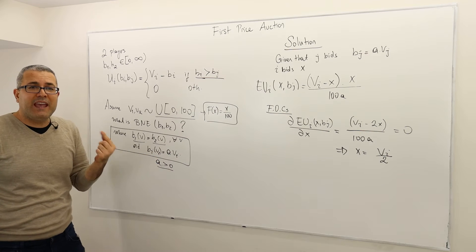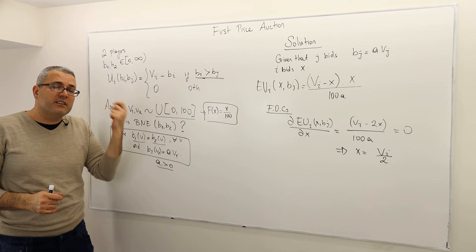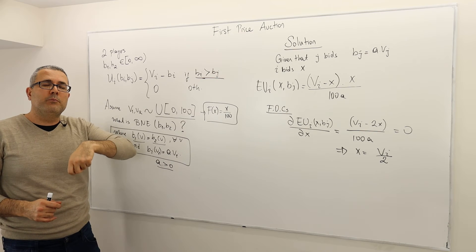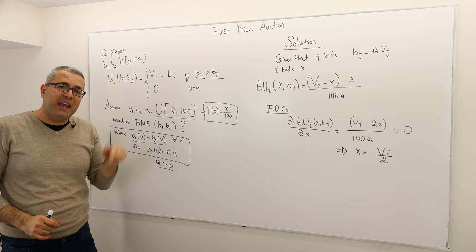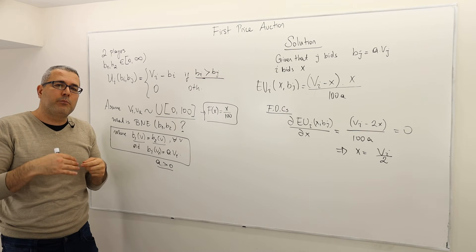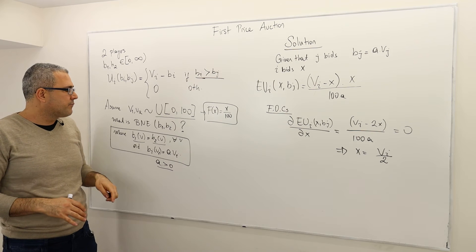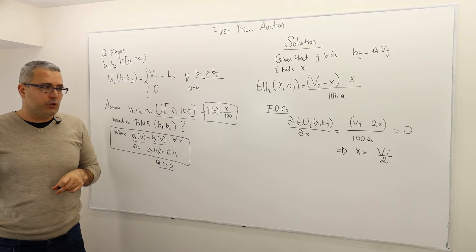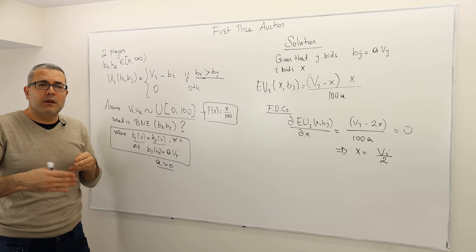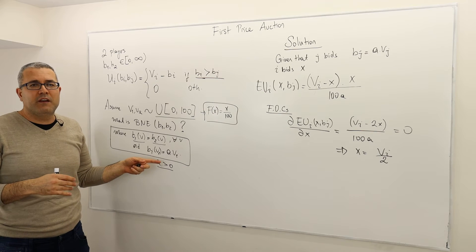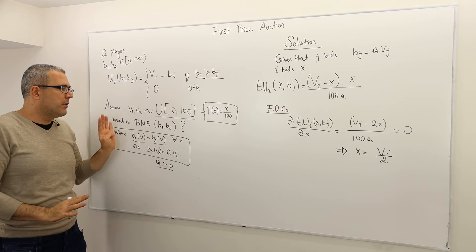If A equals one, they bid their valuation. A can be greater than one, meaning they bid higher than their valuation — which shouldn't be an equilibrium. If A is less than one, they only bid a portion of their valuation. I don't know what A is — that's what I'm going to find. There may be other Bayesian Nash equilibria where strategies are not symmetric or not linear, but let's focus on this symmetric linear case.